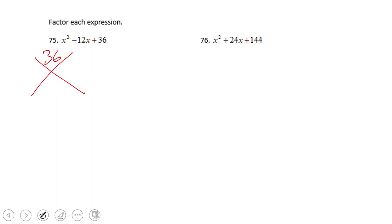36 and negative 12. The product is 36 and the sum is negative 12, and those are negative 6 and negative 6, right? Negative 6 times negative 6 is positive 36, and when we add them, negative 6 plus negative 6 is negative 12.